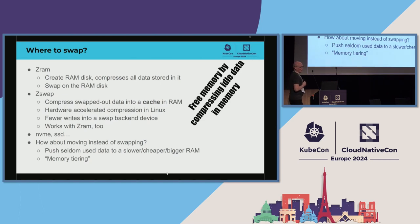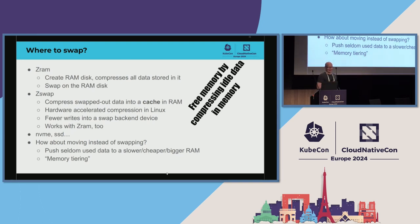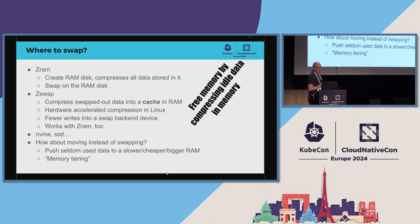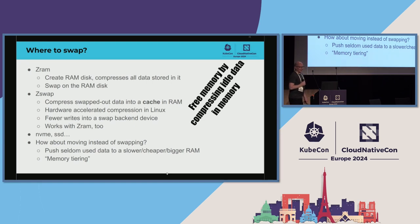Hardware acceleration also works with zswap. Then there are physical block devices like NVMe SSDs. One option that's not actually swapping but worth mentioning is adding cheaper memory to the system — for example, CXL.mem modules are cheaper than DDR5 but also slower and larger. Instead of swapping, you can scan memory, find what's not actively used, and push it to that different physical memory, keeping the most-needed data in fast memory and the rest in slower but not-too-slow memory.